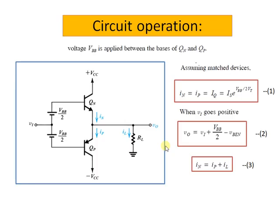So moving on to the circuit operation of the class AB amplifier. In the class AB amplifier, the crossover distortion can be virtually eliminated by biasing the complementary output transistors at a small non-zero current.